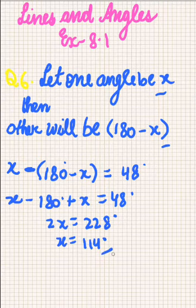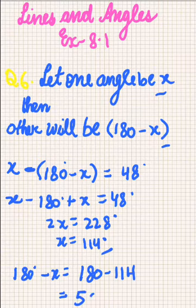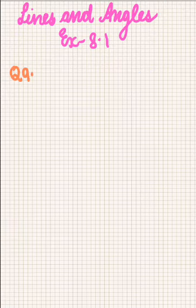X will be equal to 114 degrees. This is one angle, and the second will be 180 degrees minus 114 degrees, which will be equal to 66 degrees. So 114 degrees and 66 degrees are the answer.